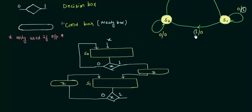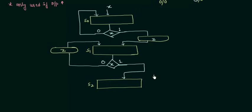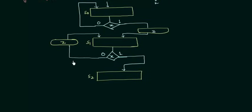When input is 1, I move from S1 to S2. So I need to make the next state box representing S2. If the input is equal to 1 I go to S2, and the output is equal to 0, so we don't require any condition box. Now on S2, we check two cases: when input is 0, I stay on the same state with output equal to 0, so no condition box is needed.